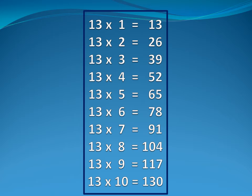Thirteen five is sixty-five. Thirteen six is seventy-eight. Thirteen seven is ninety-one. Thirteen eight is one hundred and four. Thirteen nine is one hundred and seventeen. Thirteen ten is one hundred and thirty.